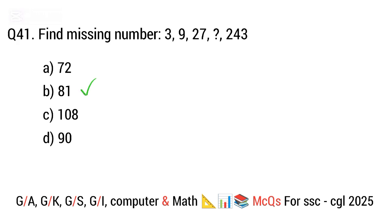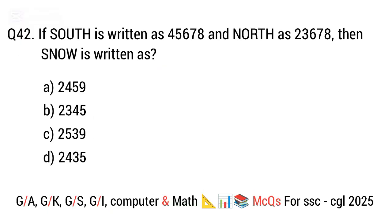Question 42. If 'south' is written as 45678 and 'north' is 23678, then 'snow' is written as? The right answer is option B. 2345.